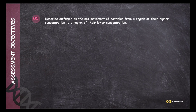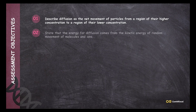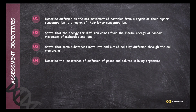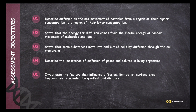Finally, let's review the assessment objectives covered in today's lecture. First, diffusion as the net movement of particles from a region of higher concentration to a region of lower concentration. Second, that the energy for diffusion comes from the kinetic energy of the random movement of molecules and ions. Third, that some substances move into and out of cells by diffusion through the cell membrane. Fourth, the importance of diffusion of gases and solutes in living organisms. And last, investigating the factors that influence diffusion, limited to surface area, temperature, and concentration gradient.